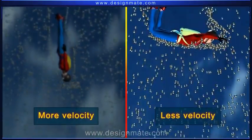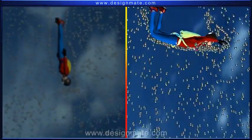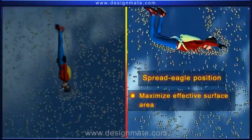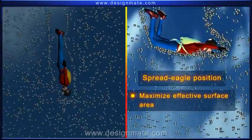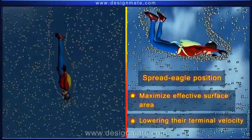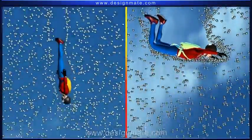During their flight, most skydivers attain spread eagle position to maximize their effective surface area, thus lowering their terminal velocity and giving them more time to fall through the sky.